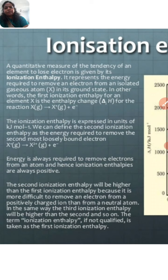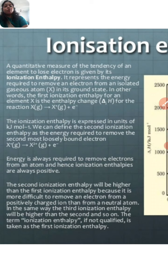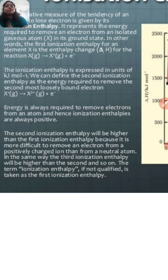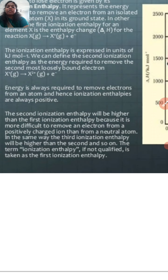If we have element X in the gaseous state and we have already removed one electron, then removing the second electron requires even higher ionization enthalpy. Energy is always required to remove an electron from an atom, hence ionization enthalpy is always positive. The second ionization enthalpy will be higher than the first because it is more difficult to remove an electron from a positively charged ion than from a neutral atom. Similarly, the third ionization enthalpy will be higher than the second, and so on.